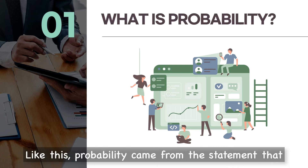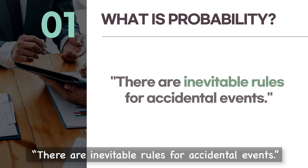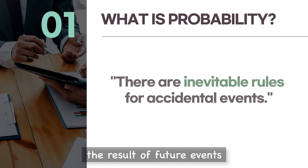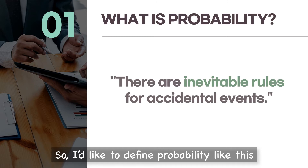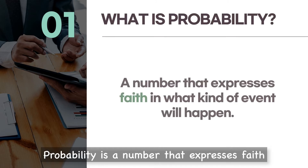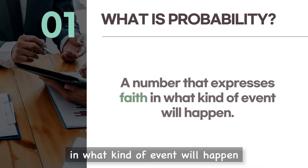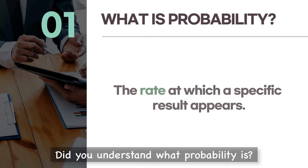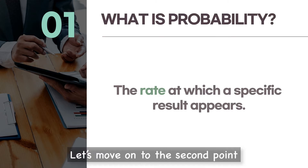Probability came from the statement that there are inevitable rules for accidental events. From that, people started to guess the result of future events. So I'd like to define probability like this: probability is a number that expresses faith in what kind of event will happen. Also, it is the rate at which a specific result appears. Let's move on to the second point.